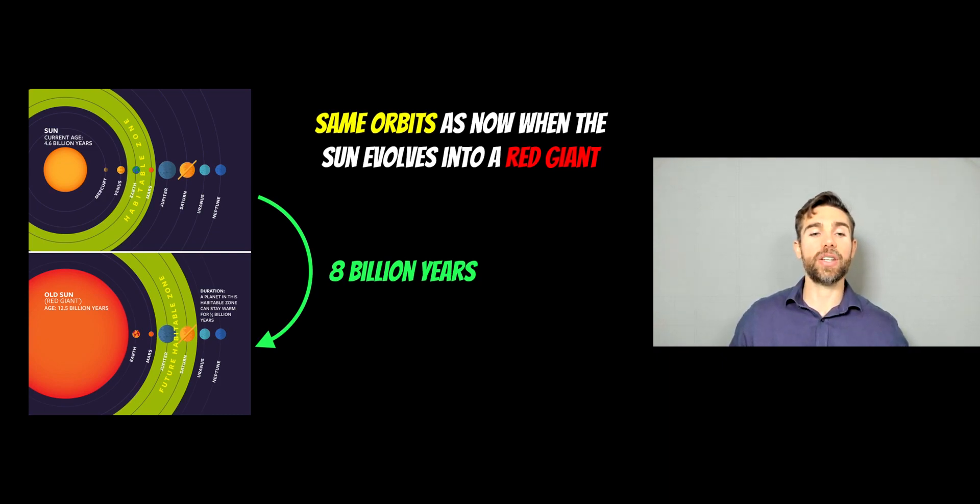So the end of the solar system or the end of the sun is going to start to be signalled when the sun goes into a red giant. It comes to the end of its life, it's going to swell up, and that happens in about 8 billion years' time. And we expect that the planets are going to be on the same orbits that they are now, pretty much.